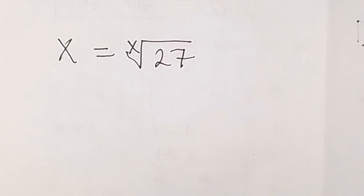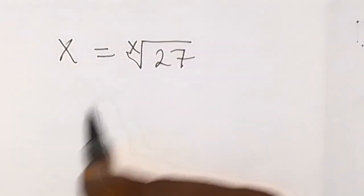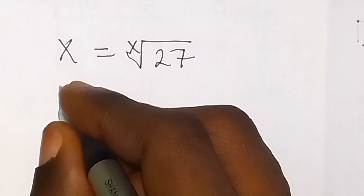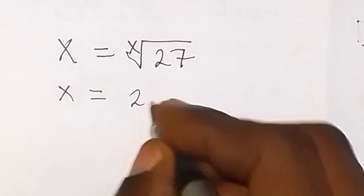Now here we can rewrite this equation as x equals to 27 raised to power 1 over x.